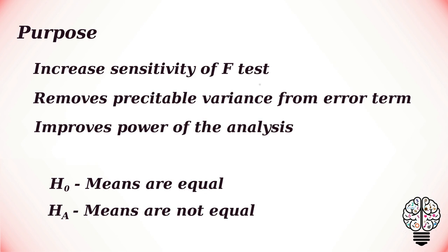The hypothesis for ANCOVA: the null hypothesis states that the group means are equal after controlling for the covariate, and the alternative hypothesis states that the group means are not equal after controlling for the covariate.